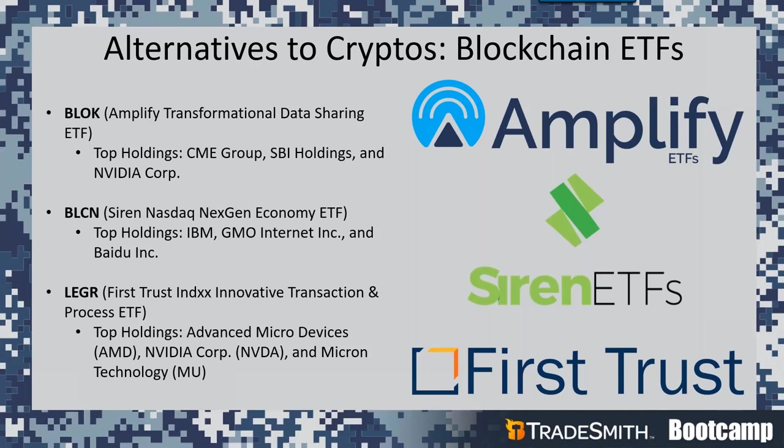Last but certainly not least, we've got Ledger — this tracks the Blockchain Index, which gauges the performance of companies that utilize or invest in products that benefit from blockchain technology. A few of the top holdings include Cognizant Technology Solutions (an information technology and consulting company), Micron Technology (an American producer of computer memory and data storage), and Industrial and Commercial Bank of China Limited (a commercial banking and financial services company). You can access the website links to all three blockchain ETFs in today's presentation, so please take some time to research these as an alternative to investing in cryptocurrencies.